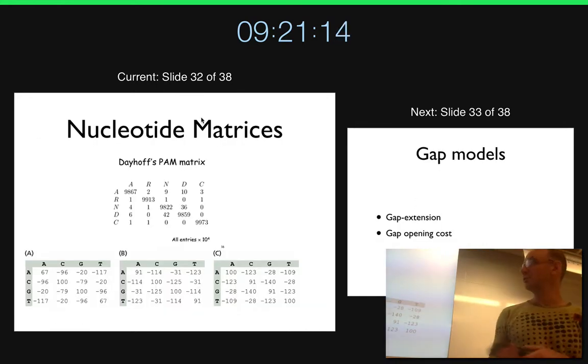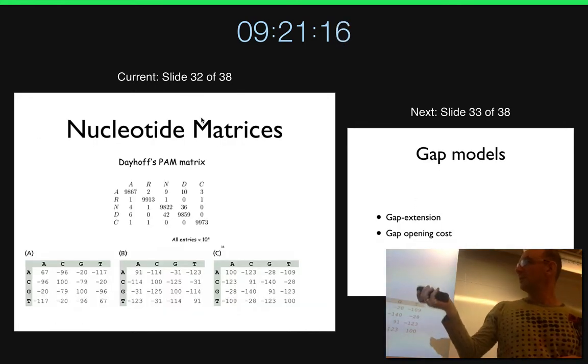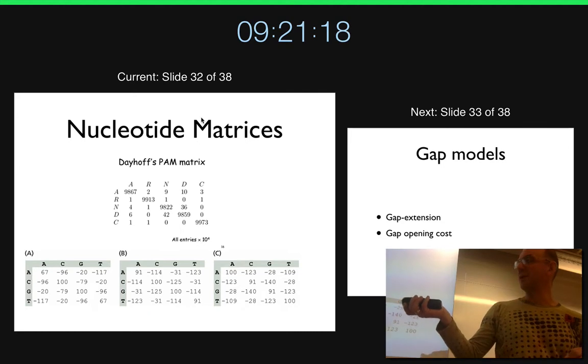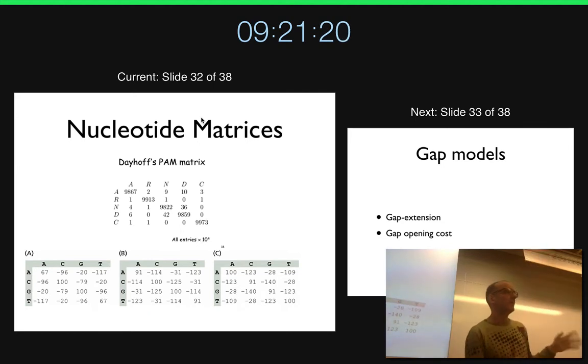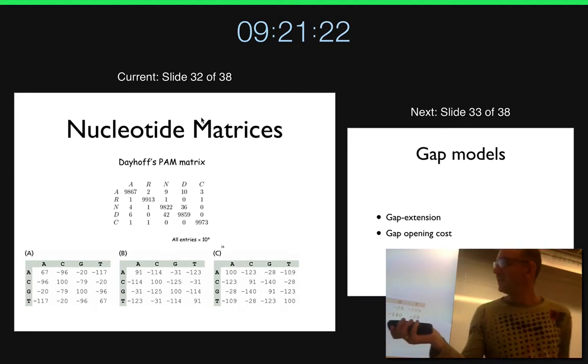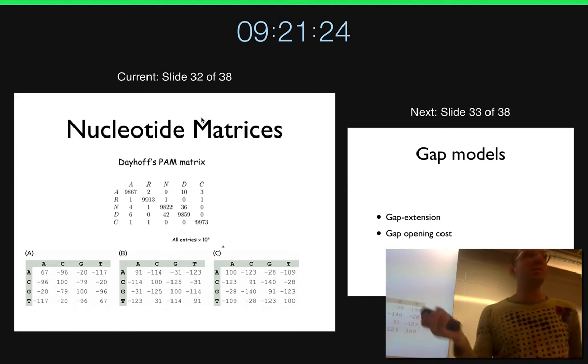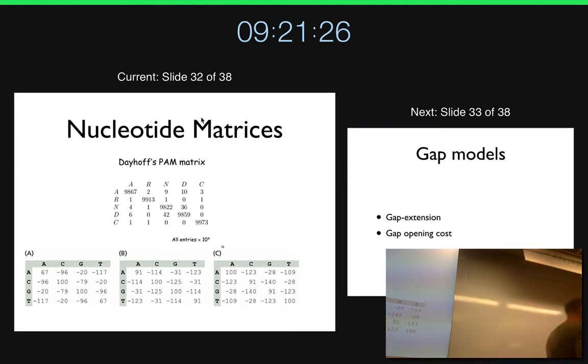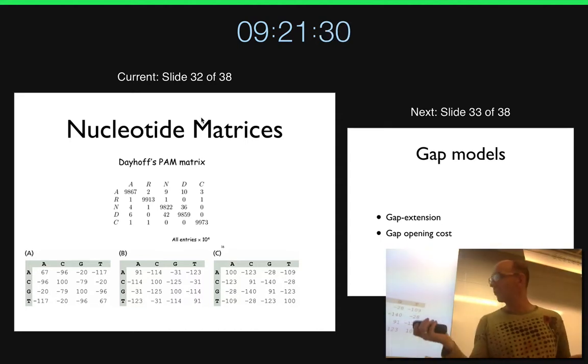And you can do the same thing for nucleotides. But here you can basically have almost one and minus one and everything is quite okay. But the TC, pyrimidine to pyrimidine are slightly less bad than anything else. But it's not that big of a difference.